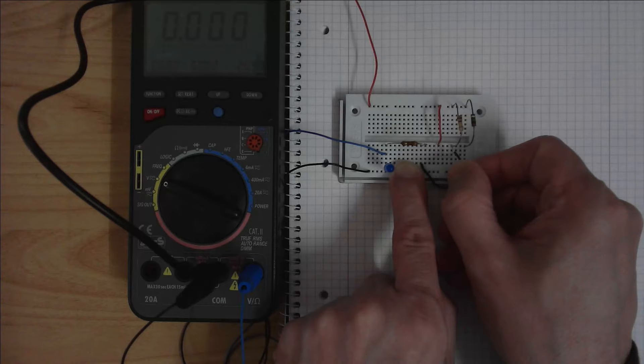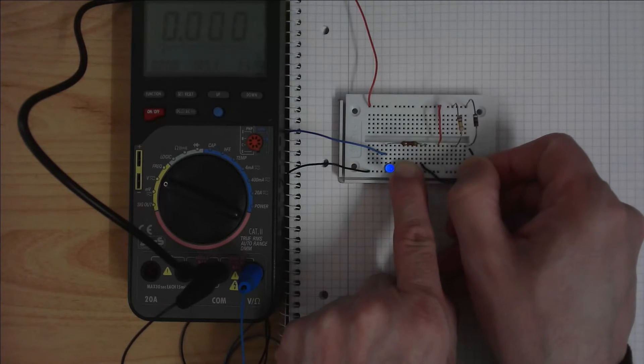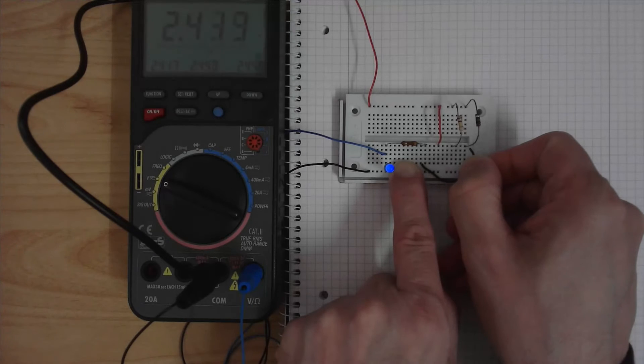If I connect it via the 100 kiloohm resistor we have still a forward voltage of 2.5V and the LED is illuminating. And even with the 1 megaohm resistor we have 2.45V forward voltage and the LED is still illuminating.